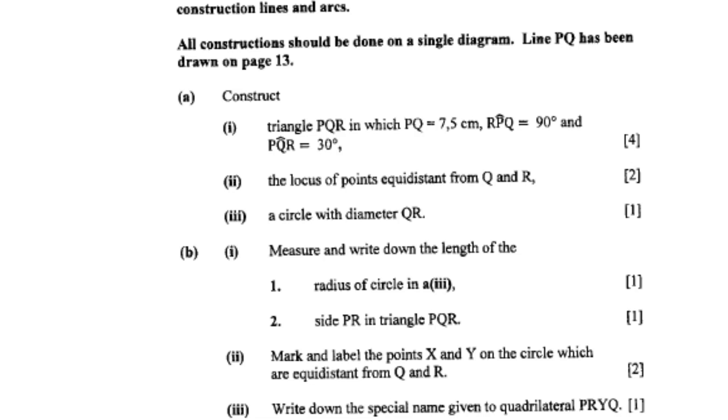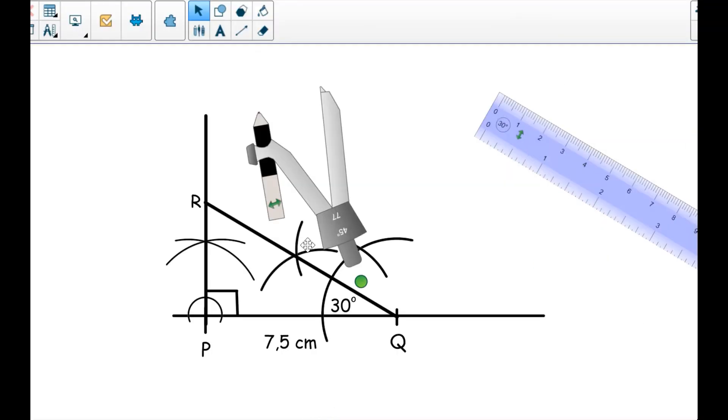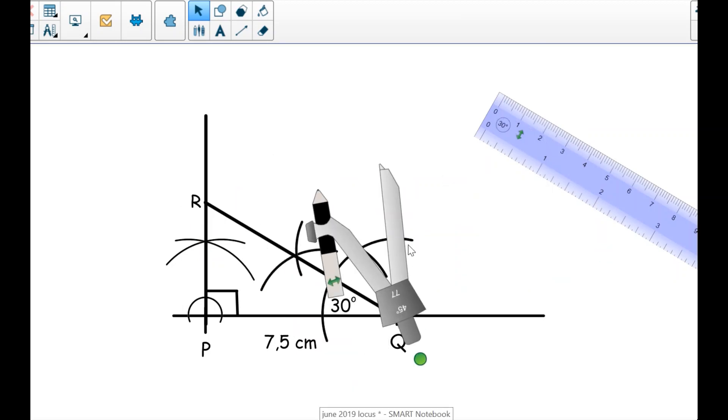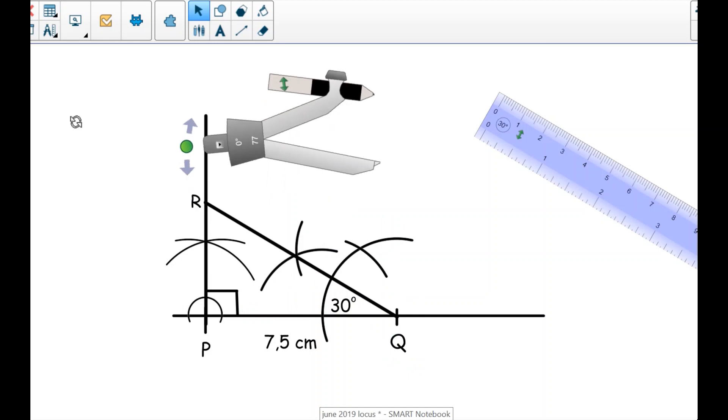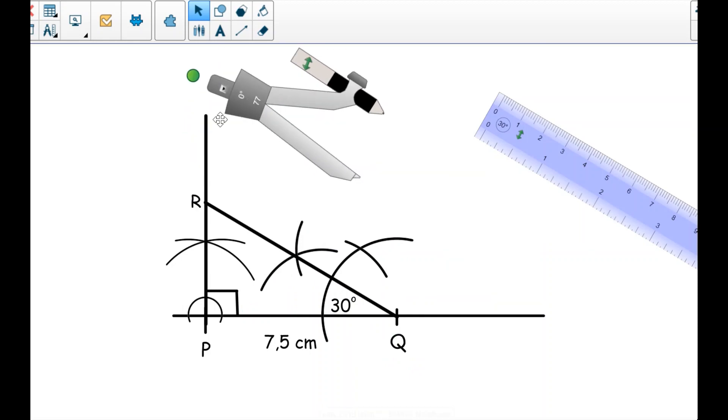Now that I have labeled PQR, go back to the question. I need to construct the locus of points equidistant from Q and R, so I will identify Q and R from the diagram. I am bisecting a line because I am given two points. I explained this in my step-by-step video lessons in Fitri Access App.